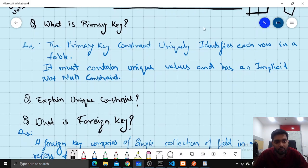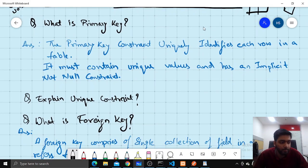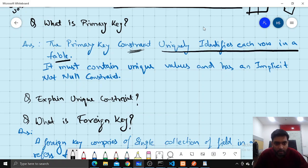Now let's talk about the next interview question which is what are primary keys. Primary key is a constraint that uniquely identifies each row in a table. It must contain unique values and has implicit NOT NULL constraint. If you don't specify unique and not null, then it will also be primary key.